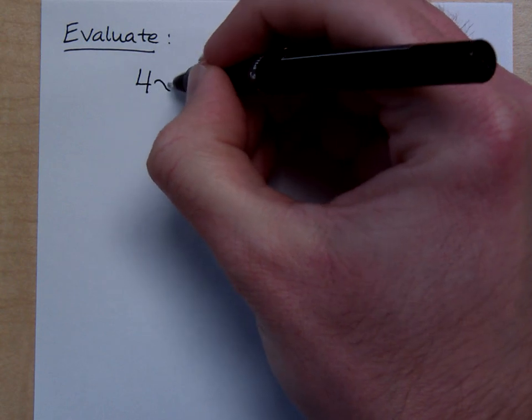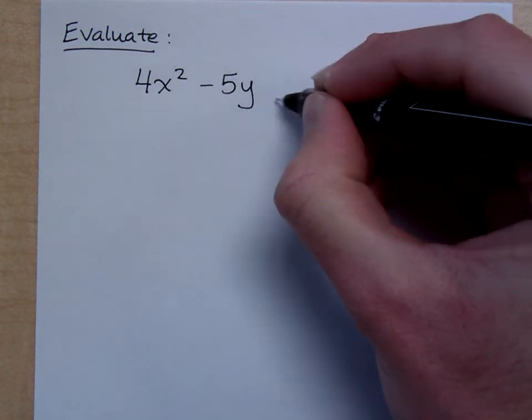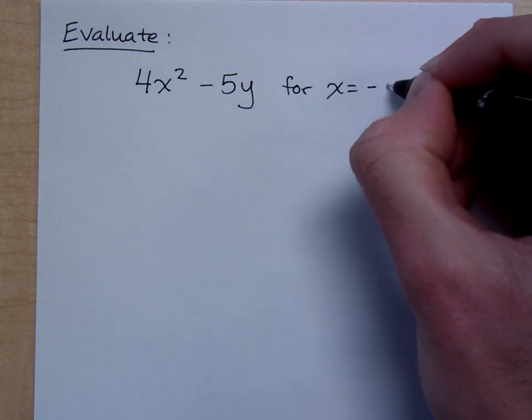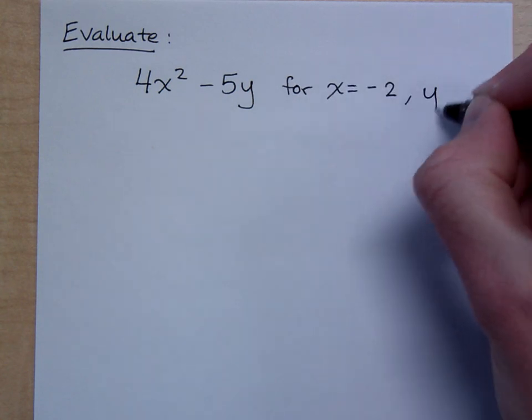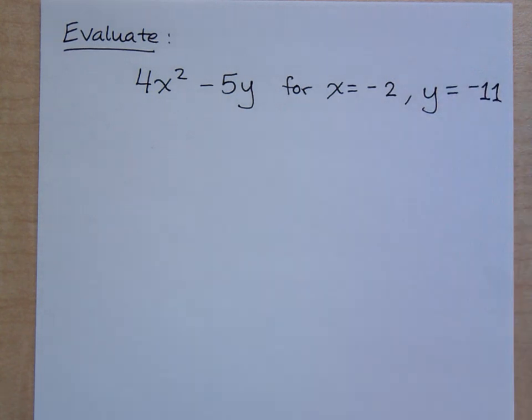I want you to take this expression, 4x squared minus 5y. I want you to evaluate this for x equals negative 2 and y equals negative 11. Now what do you think that means that we need to do here?